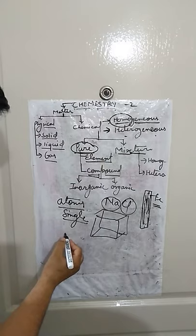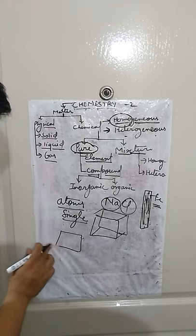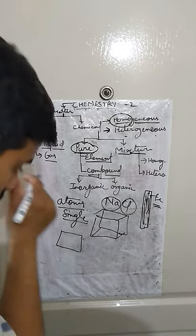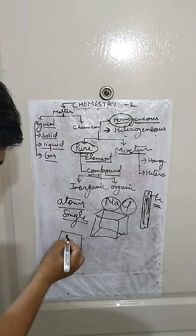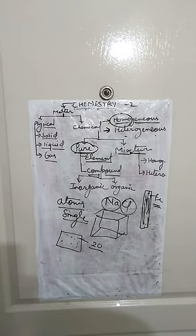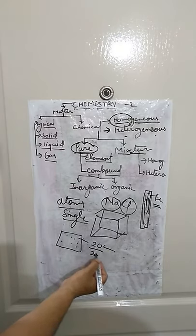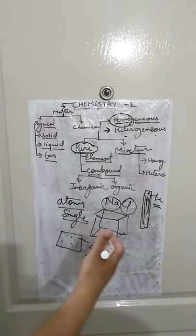Suppose you have calcium powder. If I want to call it an element, then all atoms in it should be calcium atoms — those with atomic number 20, meaning 20 protons, 20 electrons, and if atomic mass is 40, then 20 neutrons as well. Nothing else should be present. So the simple meaning of an element is: a substance which consists of the same type of atom is known as an element.